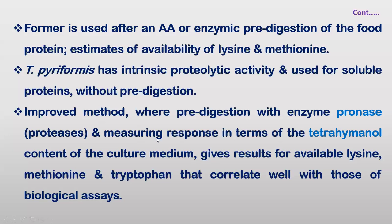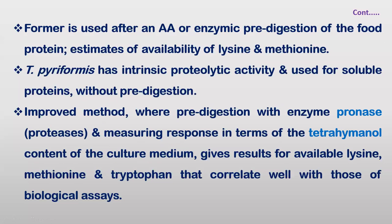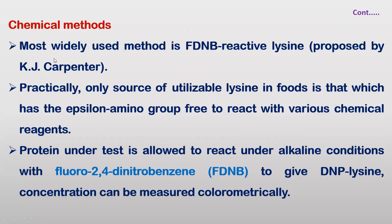Next is the chemical method. We can estimate protein quality by applying chemical methods. Fluorodinitrobenzene — FDNB — is reactive with lysine, and this method was proposed by K.J. Carpenter. The chemical method is not the most widely applicable, but we can assess protein quality in livestock using it.